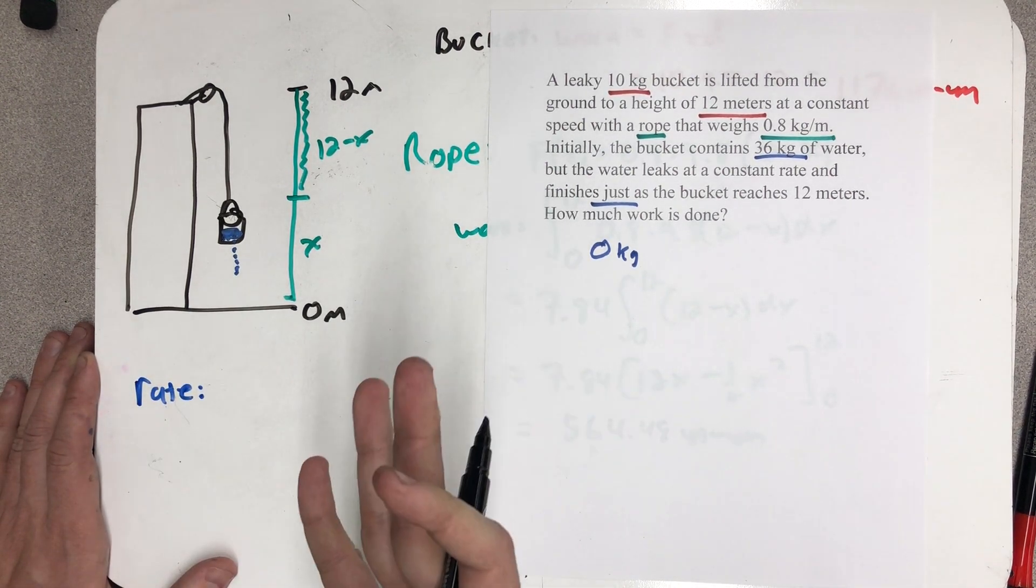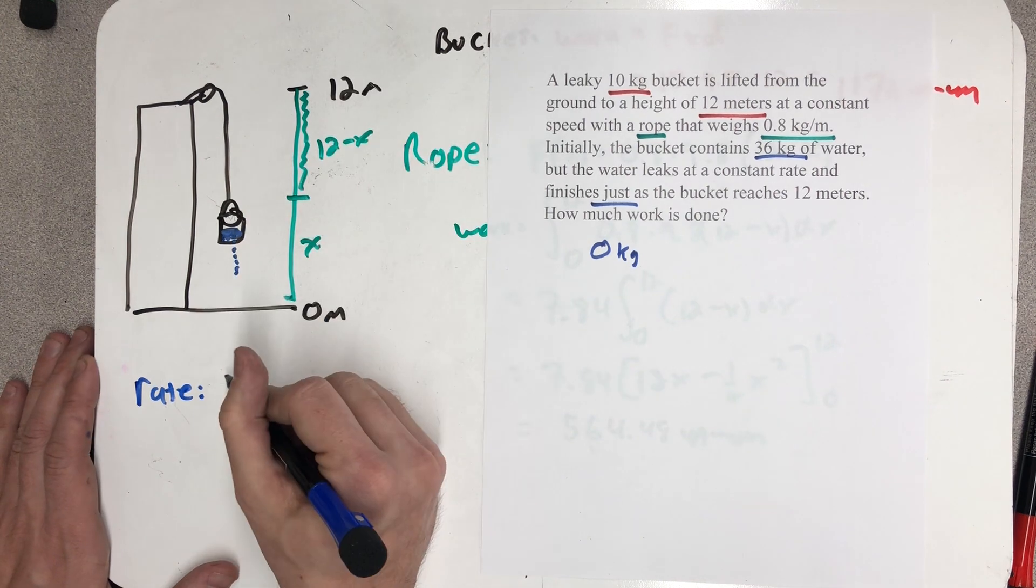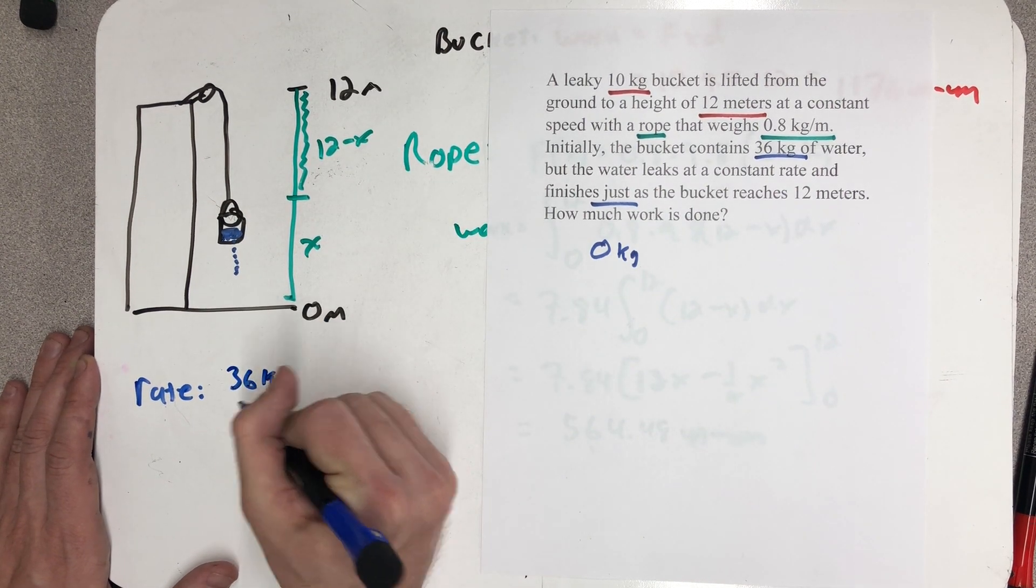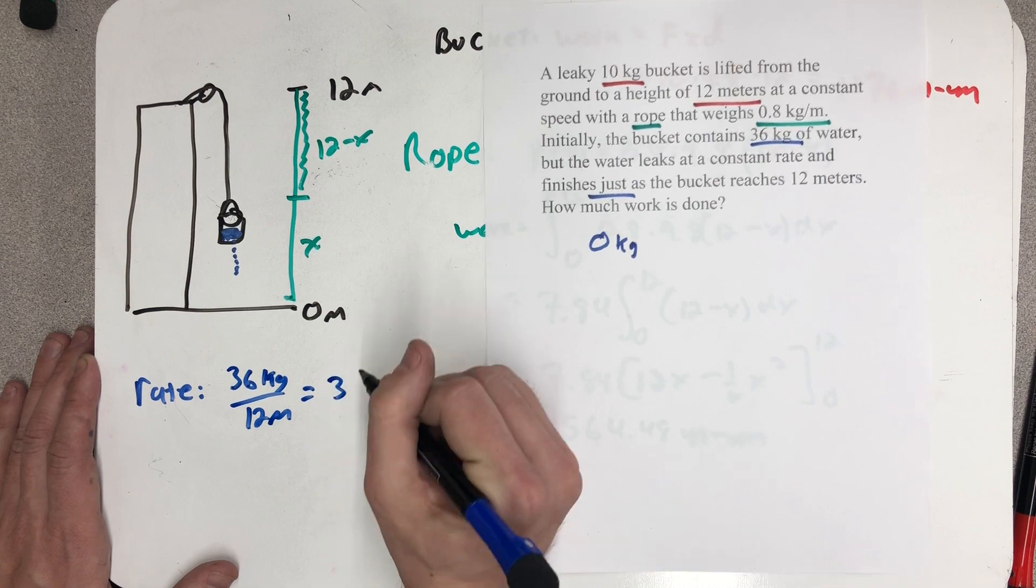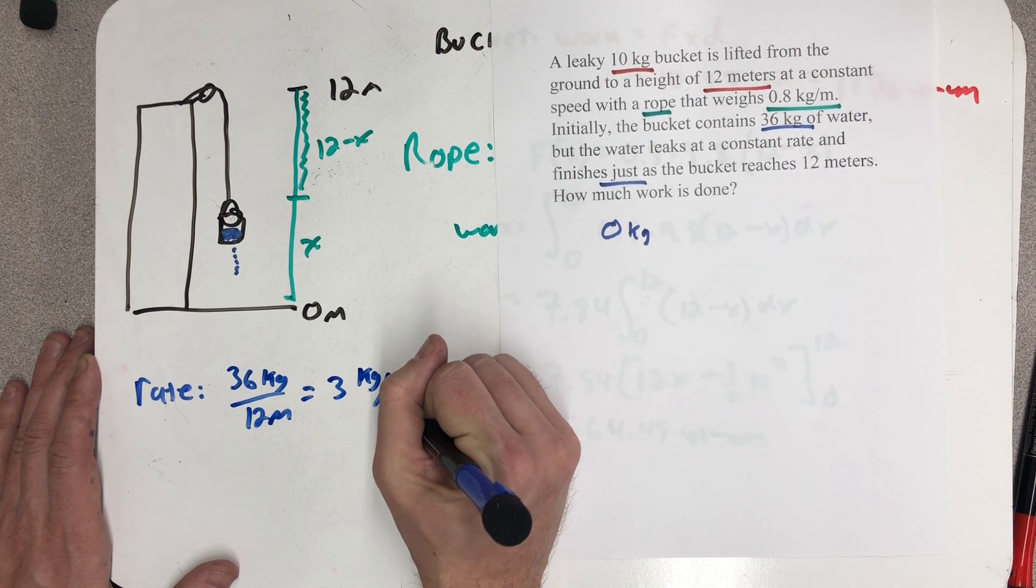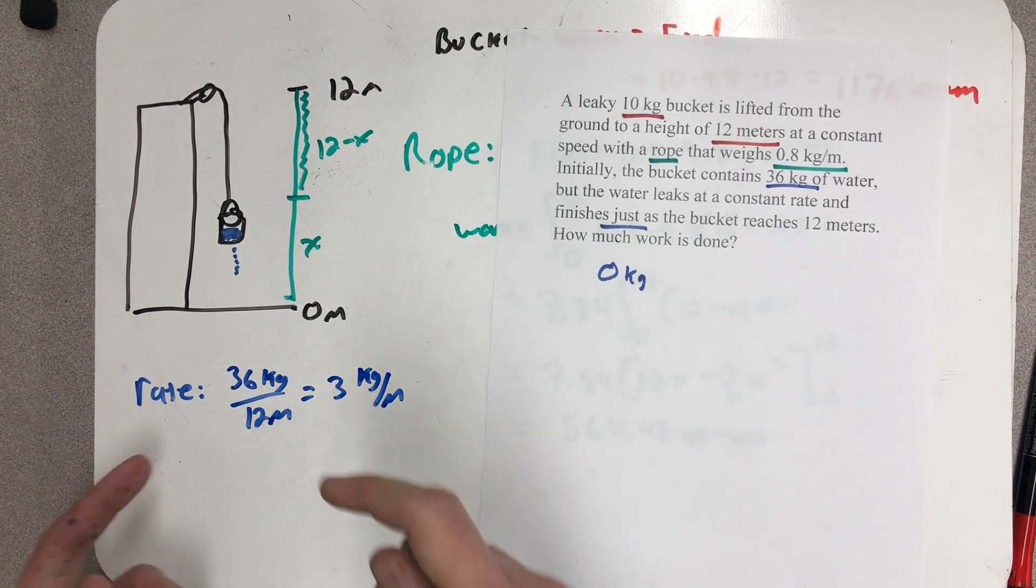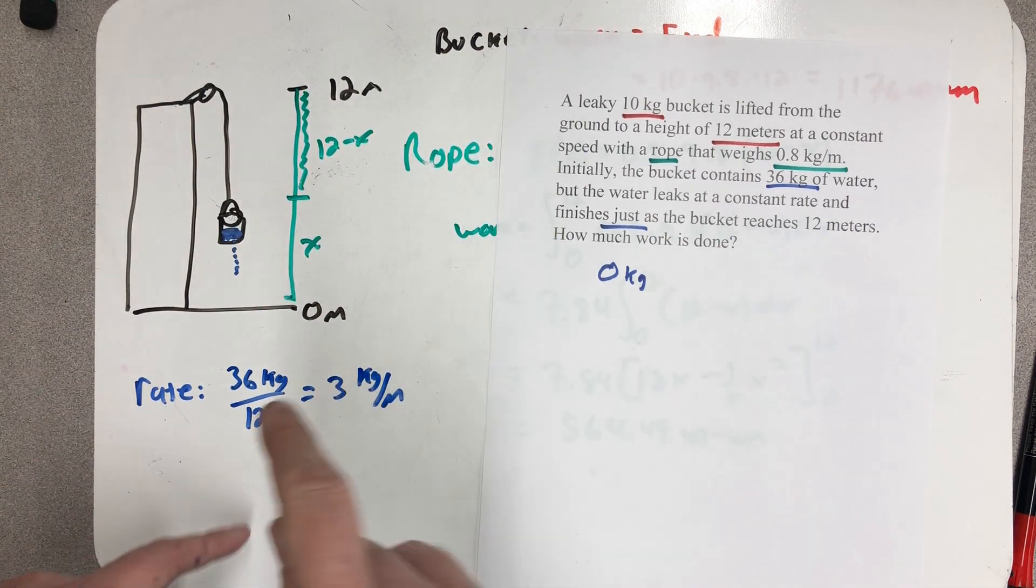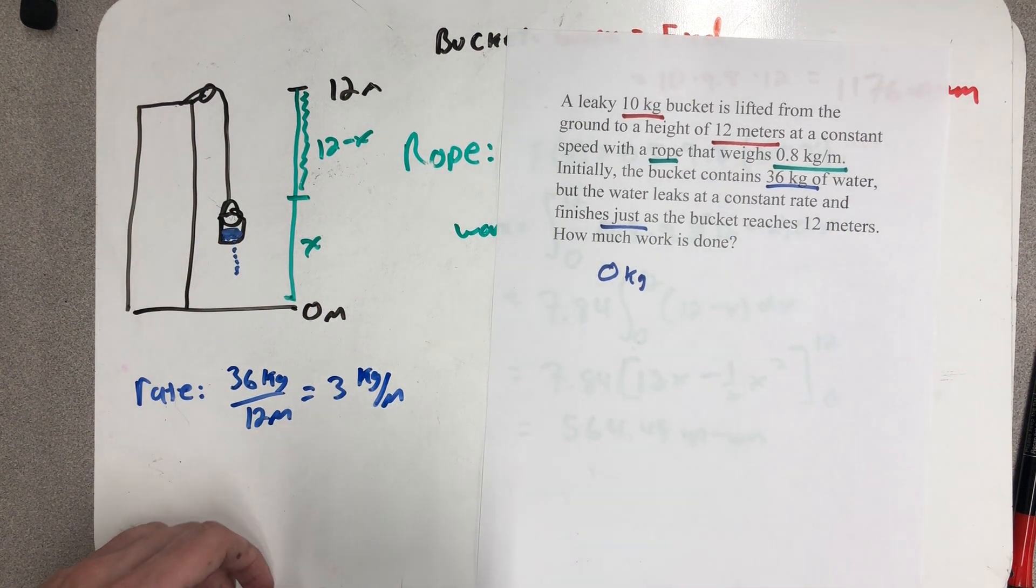So I know I lose all 36 kilograms over the 12 meters. That's 36 kilograms per 12 meters, giving me a rate of three kilograms per meter. As the bucket travels up, I've lost three kilograms per meter of the water.